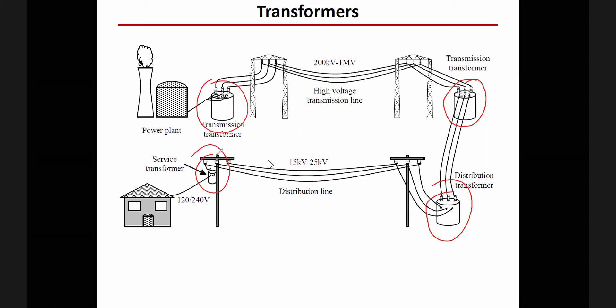Sometimes inside the house we use transformers because we need to lower the voltage. For example, you have an appliance at 110 volts and the electricity at your home is 220, so you use a transformer to lower the voltage from 220 to 110. Or the opposite — you can step up the voltage if the device is 220 and the voltage at your home is 110, you use a transformer to step up the voltage to the utilization level.